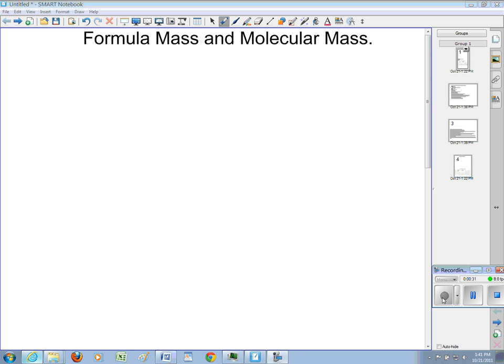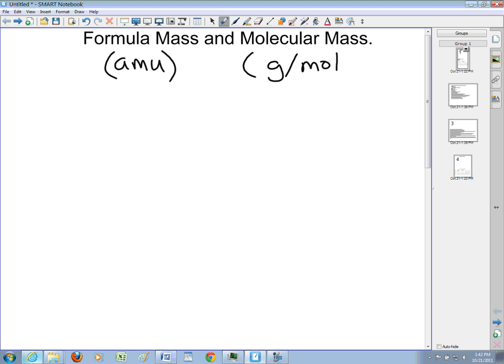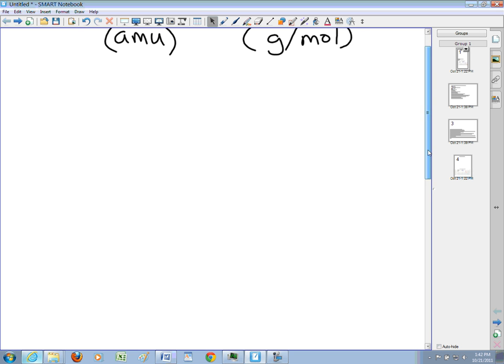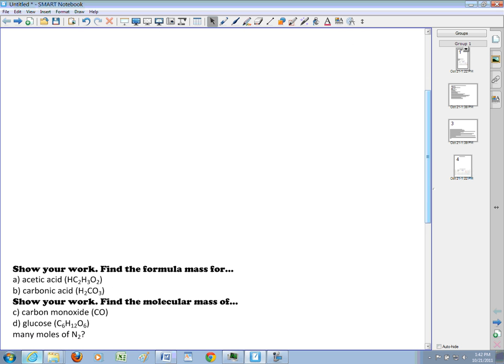For us, formula mass just means the mass of a substance or a molecule, and that will be measured in AMUs or atomic mass units. The molecular mass of a substance is calculated exactly the same way, but its units are different - its units are in grams per mole. So the method is the same, but the units are written differently.